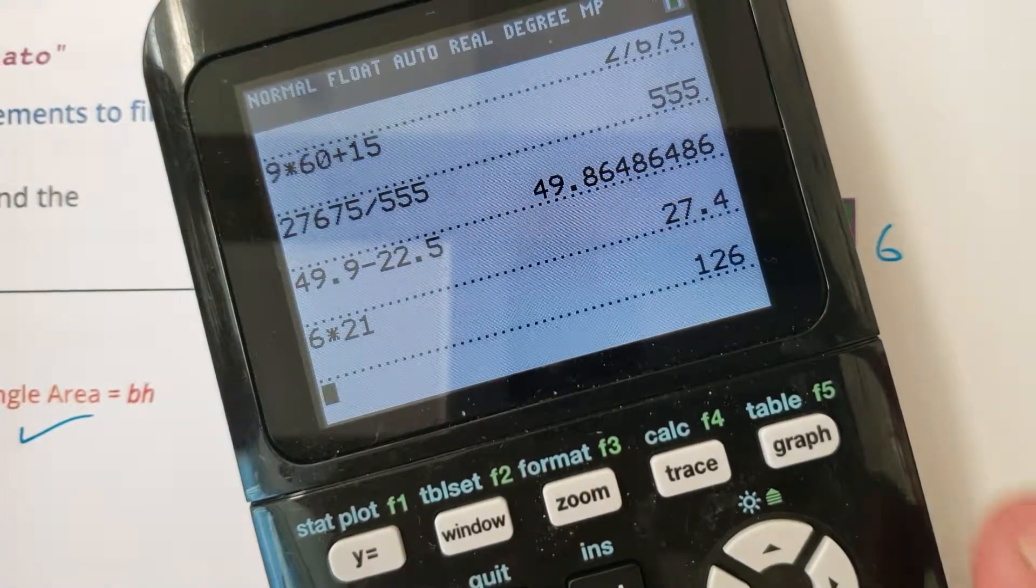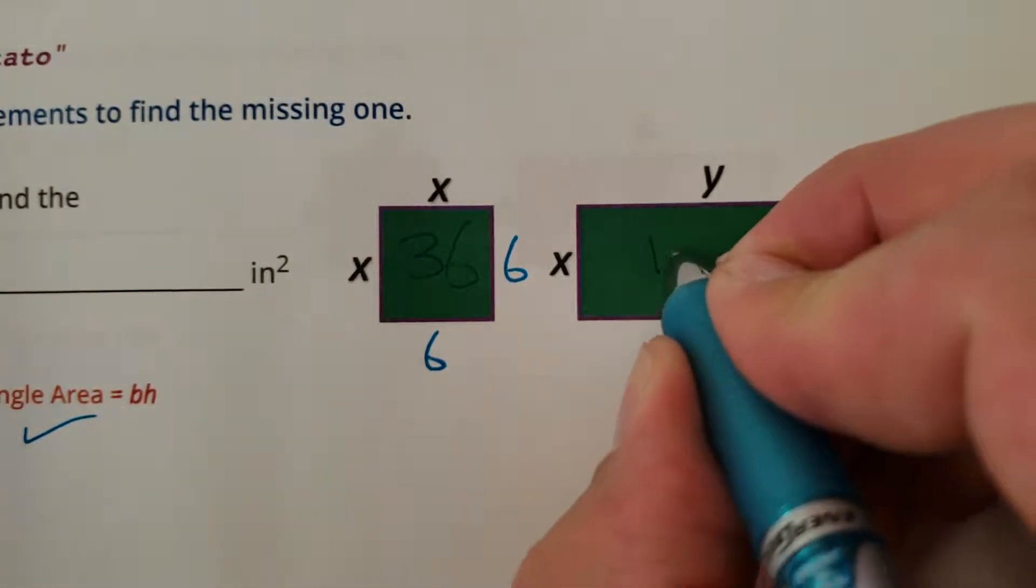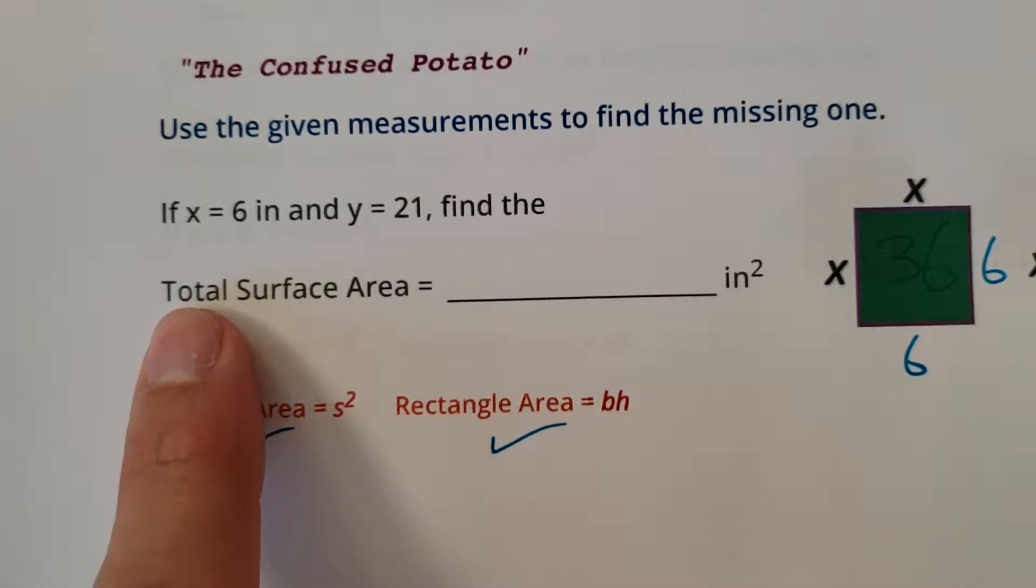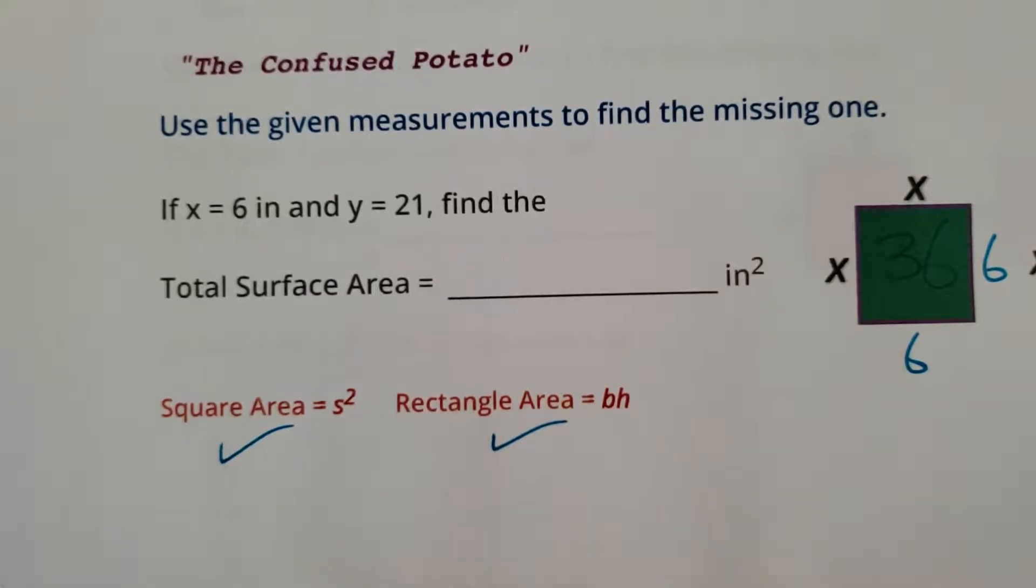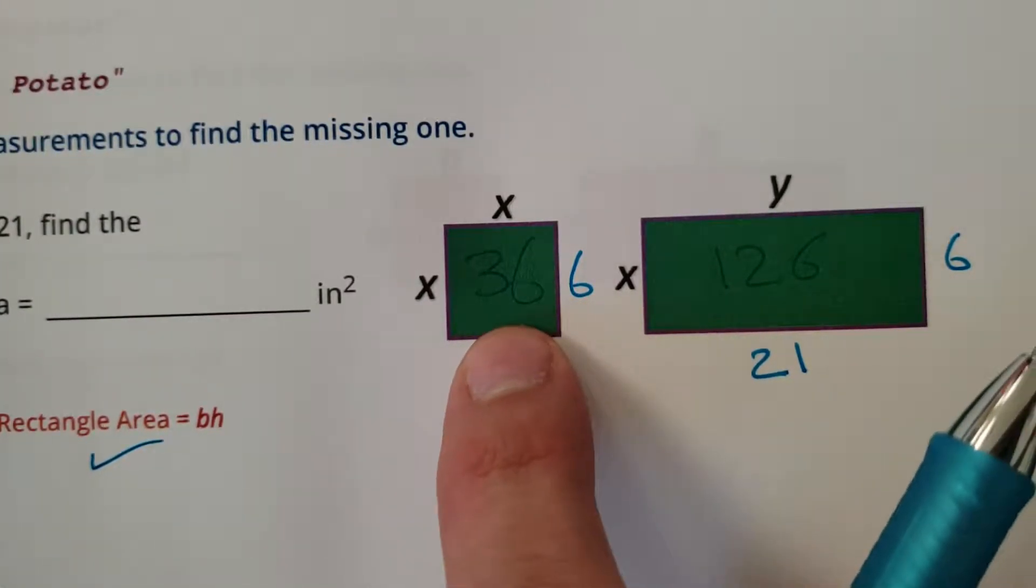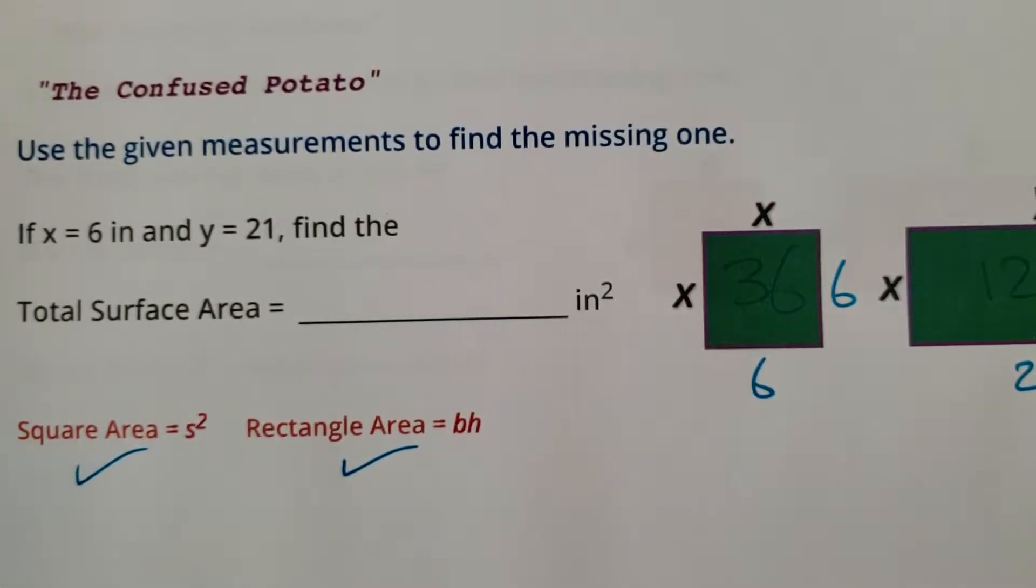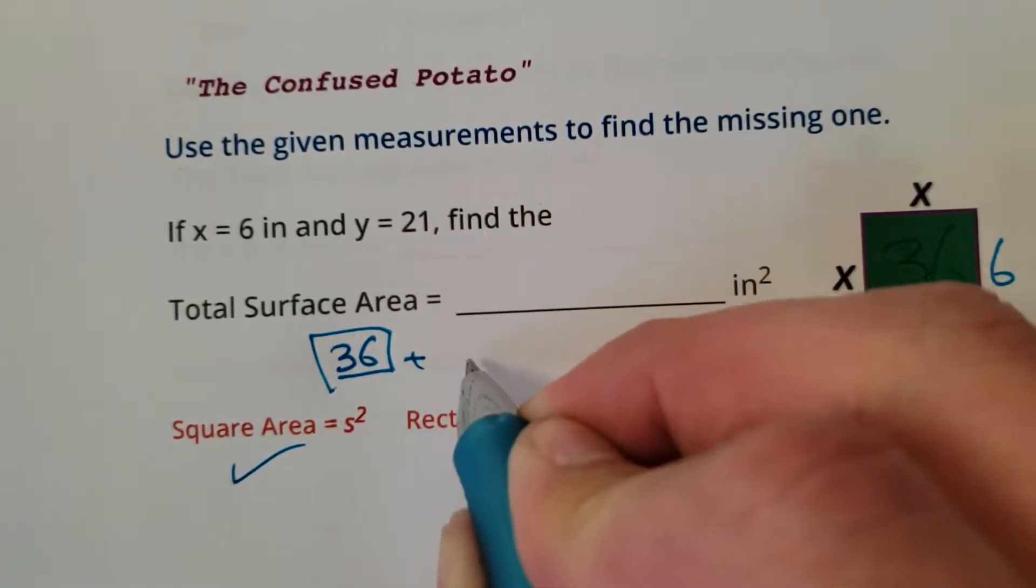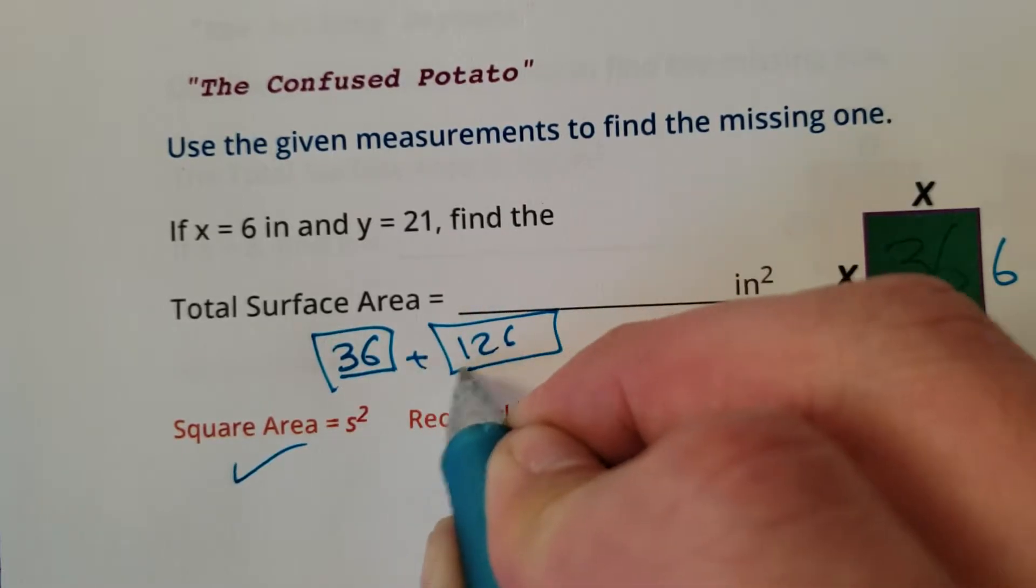The total surface area would be the total of the individual surface areas. So you'd want to take the 36 and add the 126. I'll write that down: 36 for the square plus 126 for the rectangle.